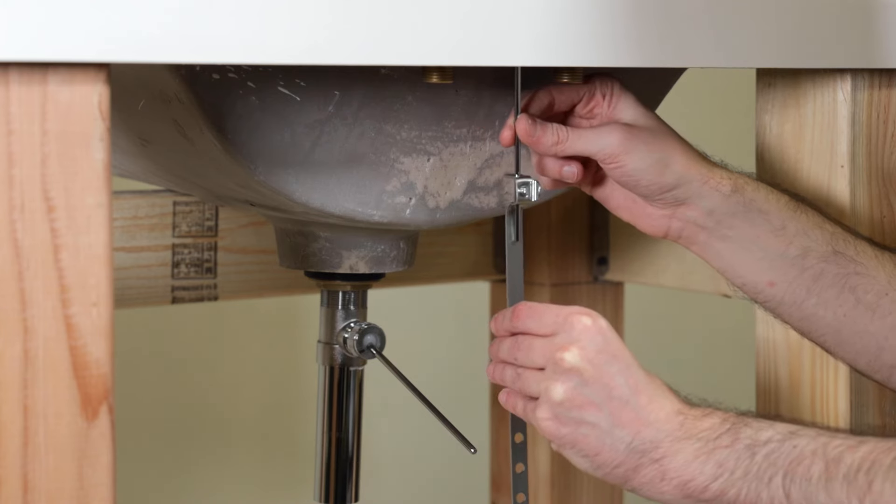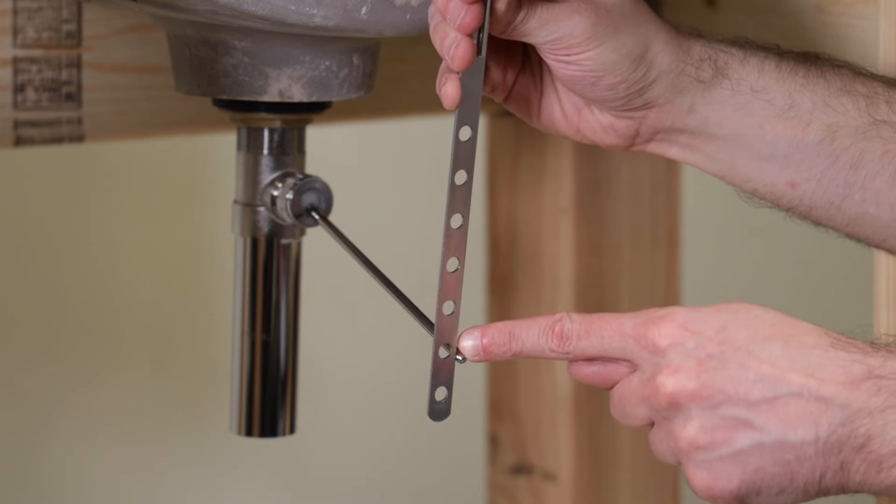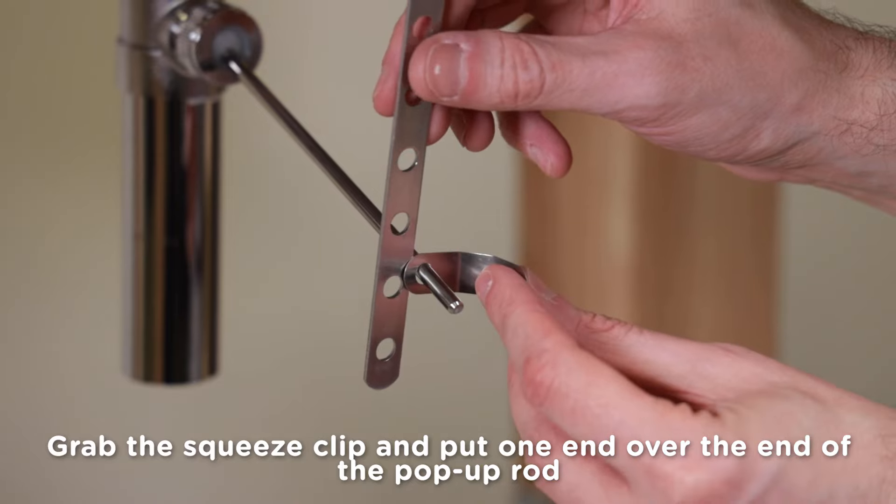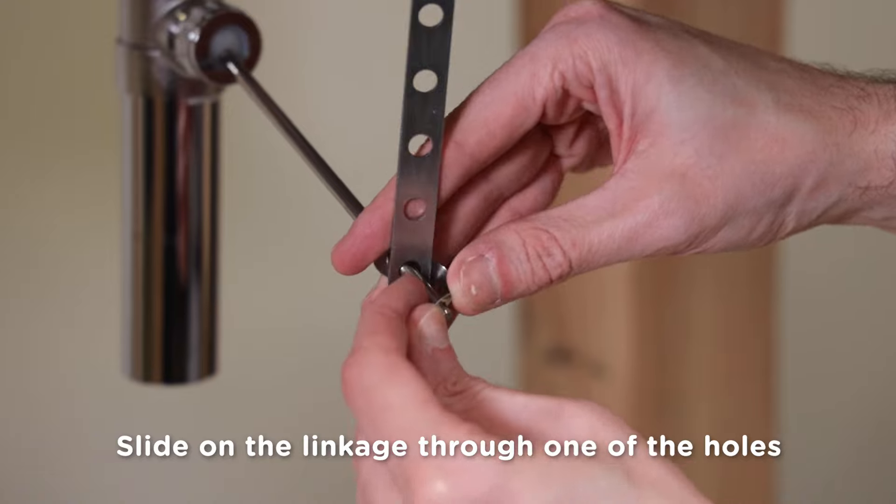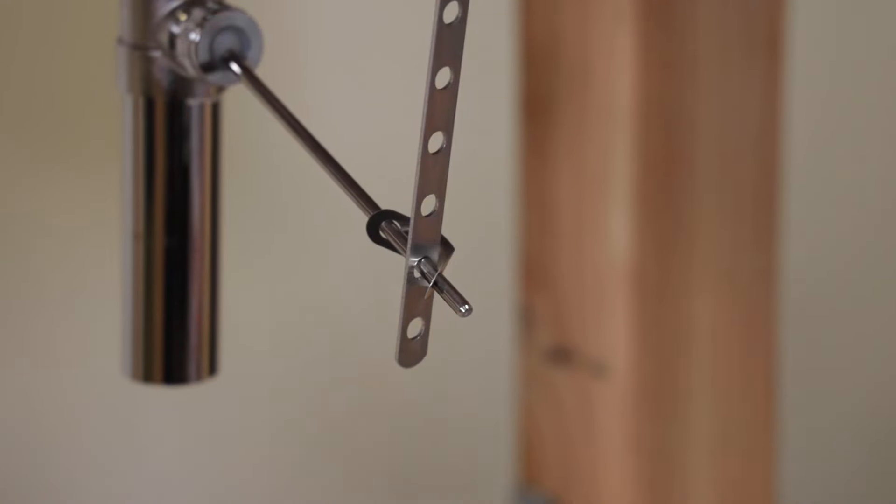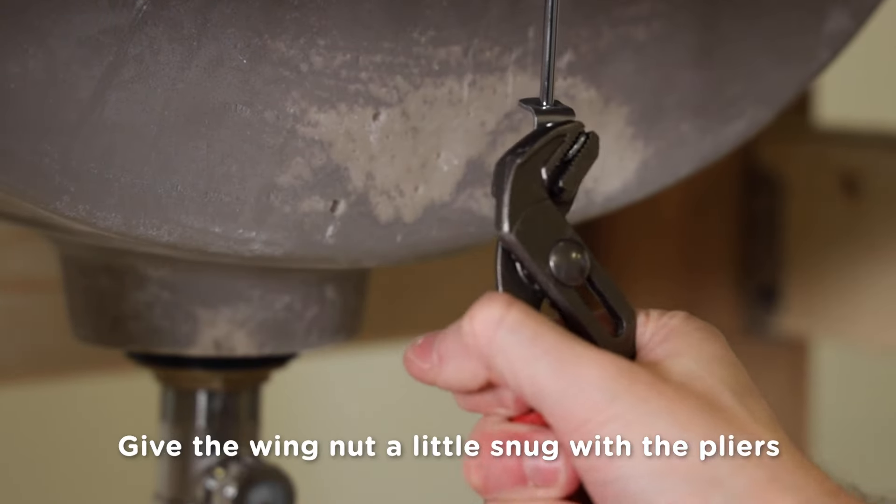Feed the faucet's lift rod into the top of the square end of the linkage, but don't tighten the wing nut yet. Slide the linkage up the rod so that one of the holes in the linkage aligns with the end of the pop-up rod. Grab the squeeze clip and put one end over the end of the pop-up rod. Then slide on the linkage through one of the holes. Then put the other side of the squeeze clip onto the rod. The goal here is to capture that linkage with the squeeze clip. Then tighten down the wing nut with your fingers and give it a little snug with the pliers.